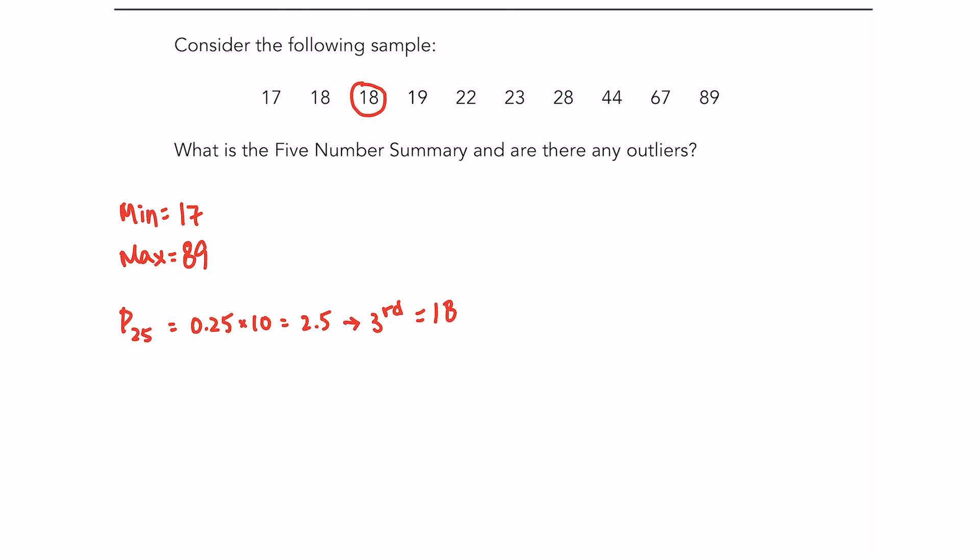The 50th percentile, or the second quartile, is also the median. So we already did this - we know the median was right in between 22 and 23, so it's 22.5.